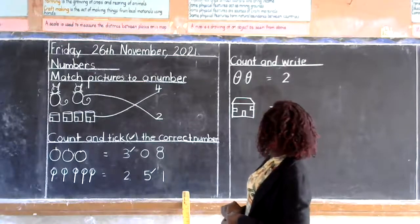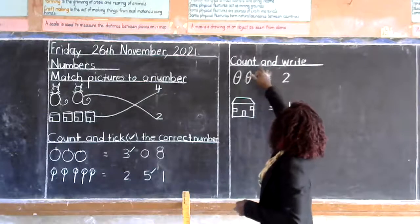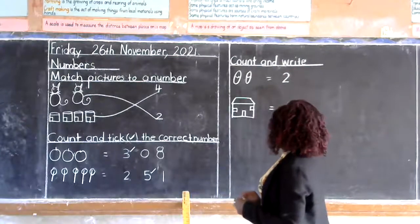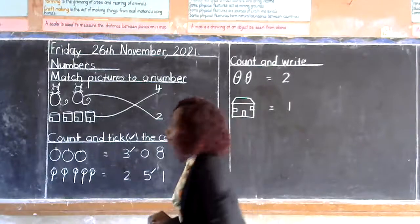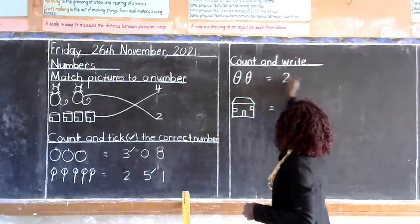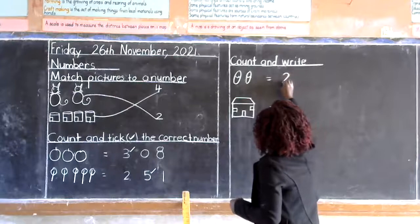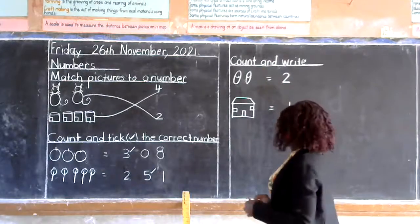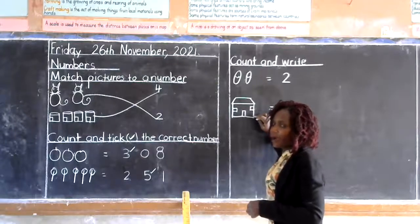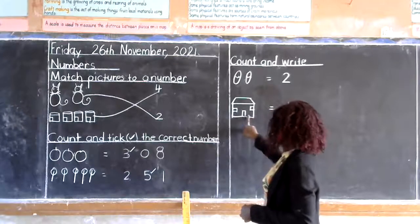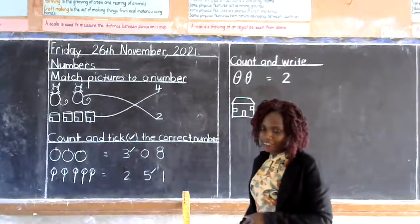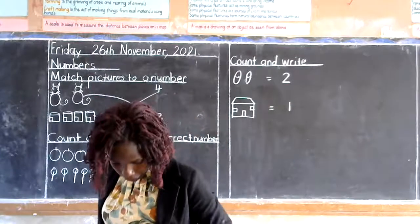Now we have also our third activity: count and write. We are going to count and write the correct number. Can we count the eggs friends? One, two. Here we are supposed to write number two. Make sure that you write the correct number two. Now we have this one — this is our house. Can we count? One. Here we write number one. That is how we are supposed to do that work. Okay?